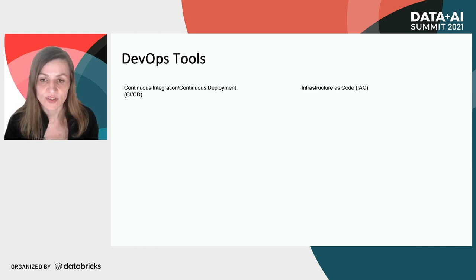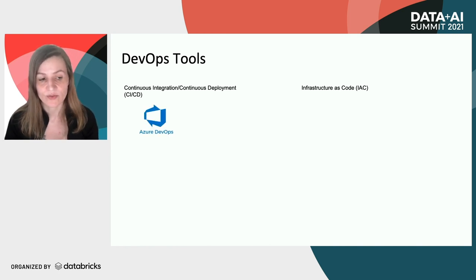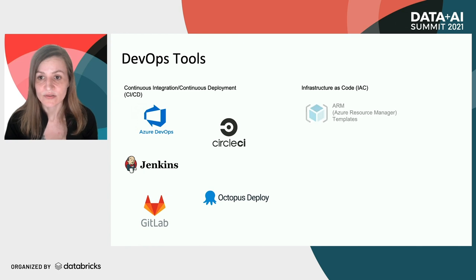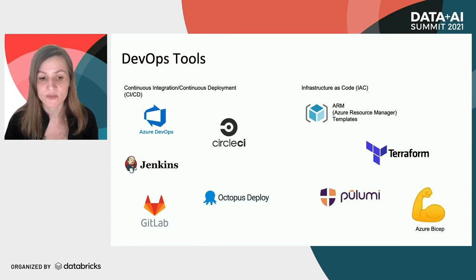What tools do we use to achieve this? We've got two schools: continuous integration and continuous deployment, and infrastructure as code. For CI/CD we can use Azure DevOps, CircleCI, Jenkins, Octopus Deploy, and GitLab. For infrastructure as code we've got ARM templates, Azure Terraform, Pulumi, and Azure Bicep. There are many more options, but these are some of the most commonly used.